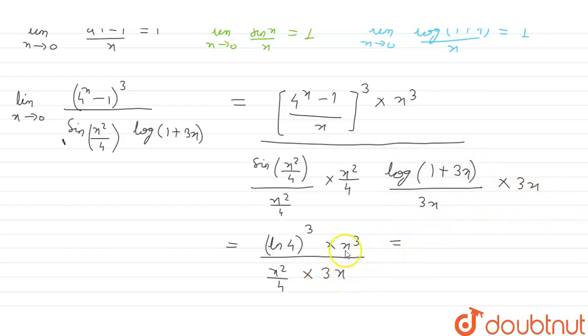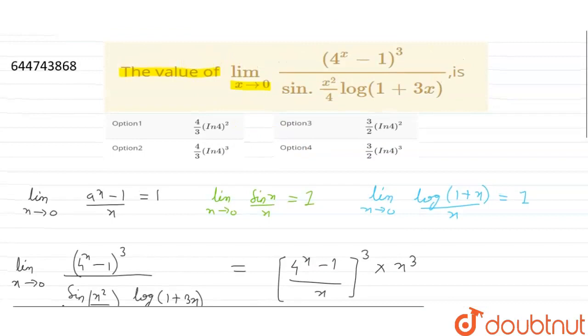This whole becomes equals to 1 and the left is 3x. Now, x cube and x cube becomes cancelled and it becomes 4 by 3 times ln 4 whole cube. The 3 by 4 inverse becomes 4 by 3. So it comes out to be 4 by 3 into ln 4 whole cube. The option becomes 4 by 3 into ln 4, option 2. Thank you.